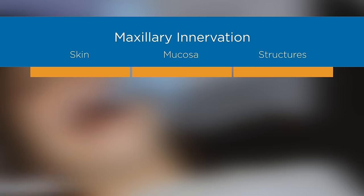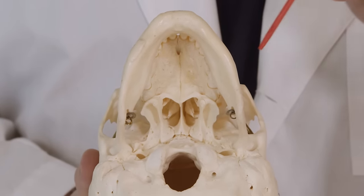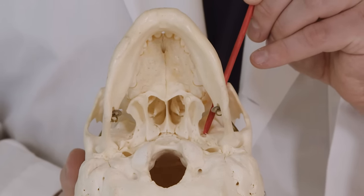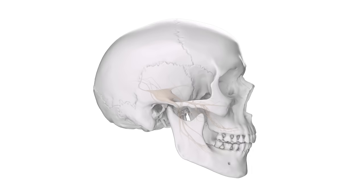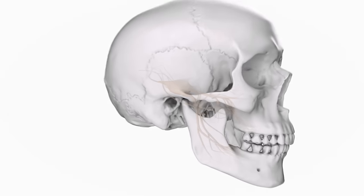The maxillary nerve exits the cranium through the foramen rotundum to reach the pterygopalatine fossa where it gives off several branches: the zygomatic nerve, the pterygopalatine nerve, and the posterior superior alveolar nerve. The zygomatic nerve enters the orbit through the inferior orbital fissure. Its branches supply the skin on the side of the forehead and prominence of the cheek. A small branch communicates with the lacrimal nerve of the ophthalmic division to carry secretory fibers to the lacrimal gland.